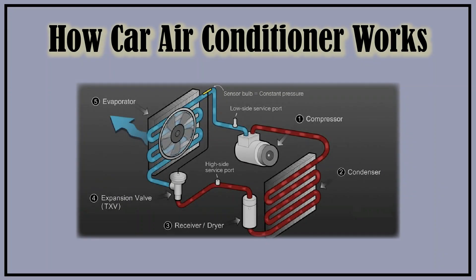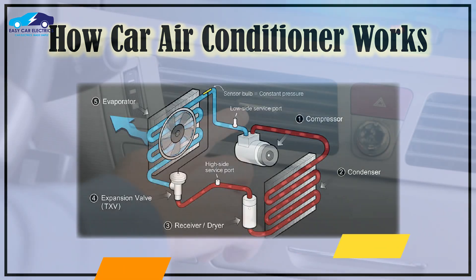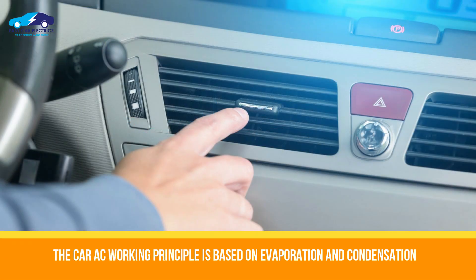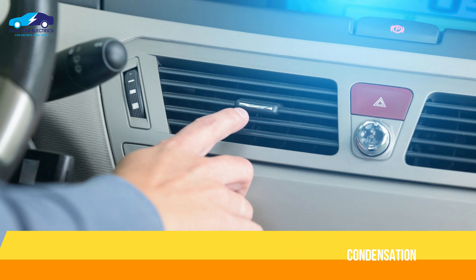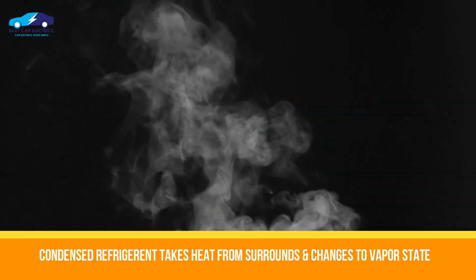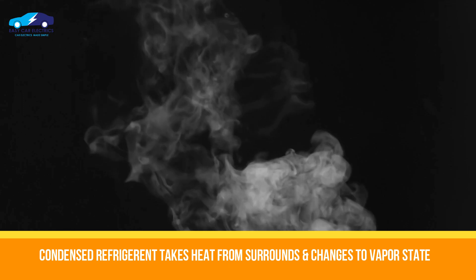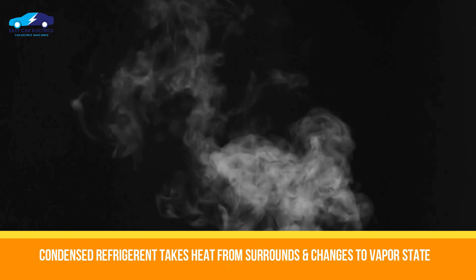How Car Air Conditioner Works — An Easy Explanation. The working principle of the car's AC system is based on evaporation and condensation. The condensed refrigerant, when it changes its state to vapor refrigerant, produces cooling by taking heat from the surrounding.